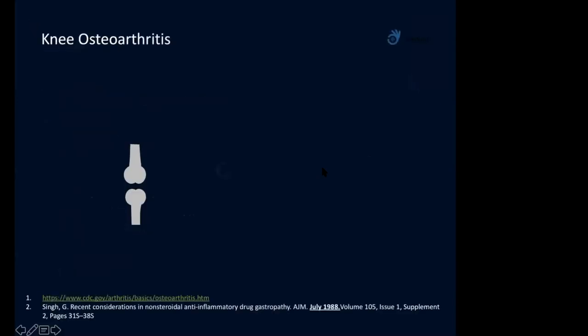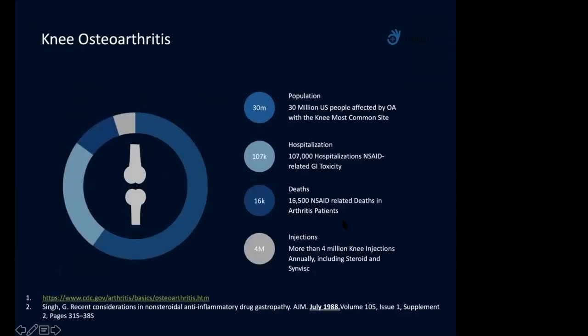These are my disclosures. Everybody knows how big a problem knee arthritis is. 30 million people in the United States are affected by knee osteoarthritis. More staggering are these figures: more than 100,000 NSAID-related GI toxicity admissions, primarily related to pain, and 16,000 estimated NSAID-related deaths just in arthritis patients alone.